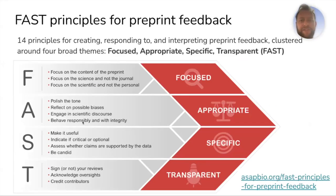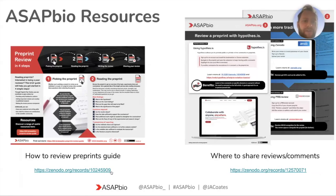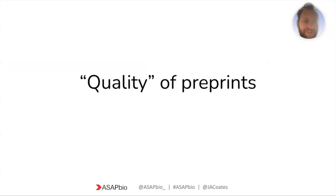When you review preprints, it's good to stick to the FAST principles: stay Focused, stay Appropriate, give Specific feedback — make it useful, don't just comment on grammar — very much about whether conclusions are supported by the data, and be Transparent. You don't have to sign your reviews but I always encourage it. Acknowledge any oversights or limitations you have as a peer reviewer and credit anyone who writes the review with you. We also have a downloadable guide with a checklist of criteria for doing a preprint peer review.